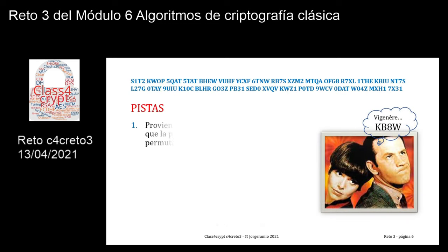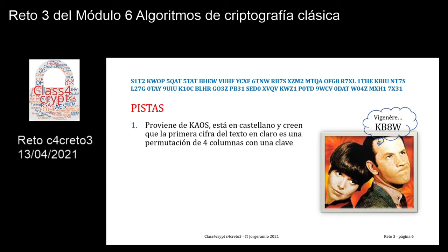Pista número 1: la llamada telefónica proviene de CAOS, está en castellano, y creen que la primera cifra del texto en claro es una permutación de cuatro columnas con una clave.